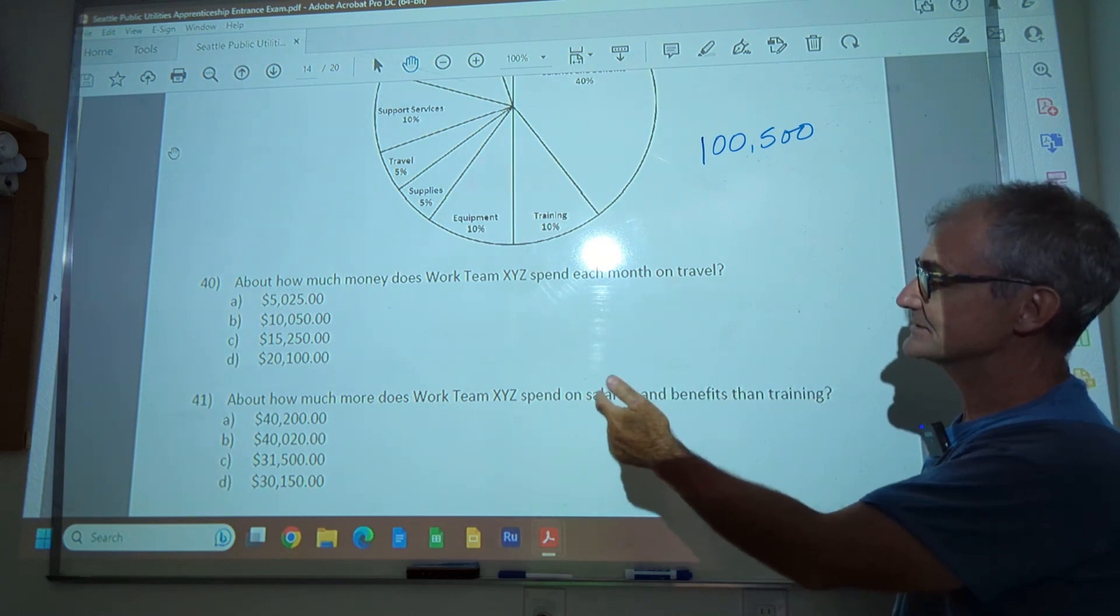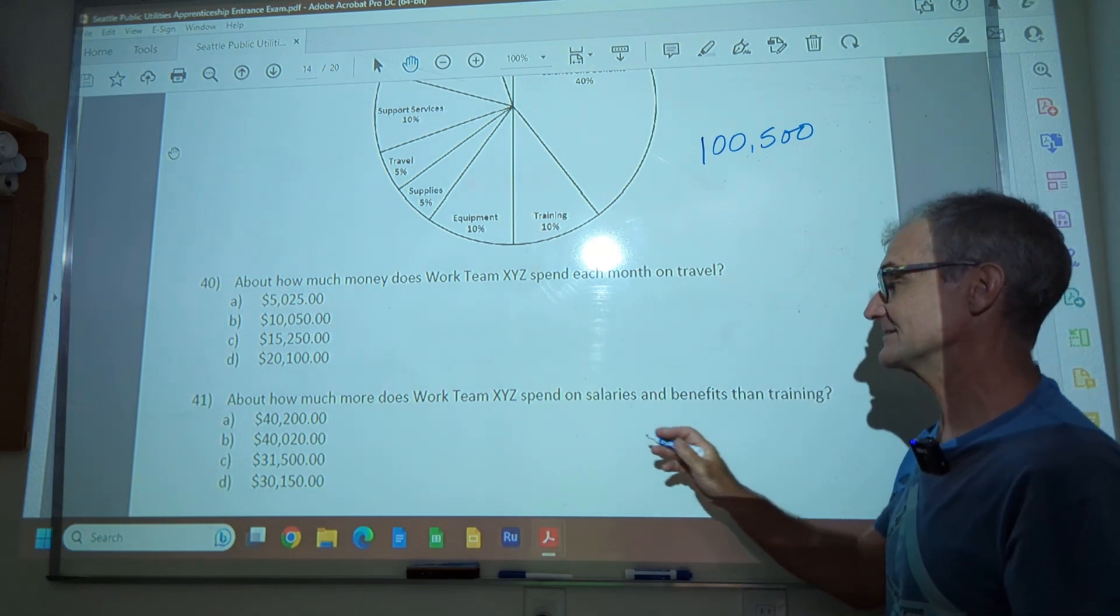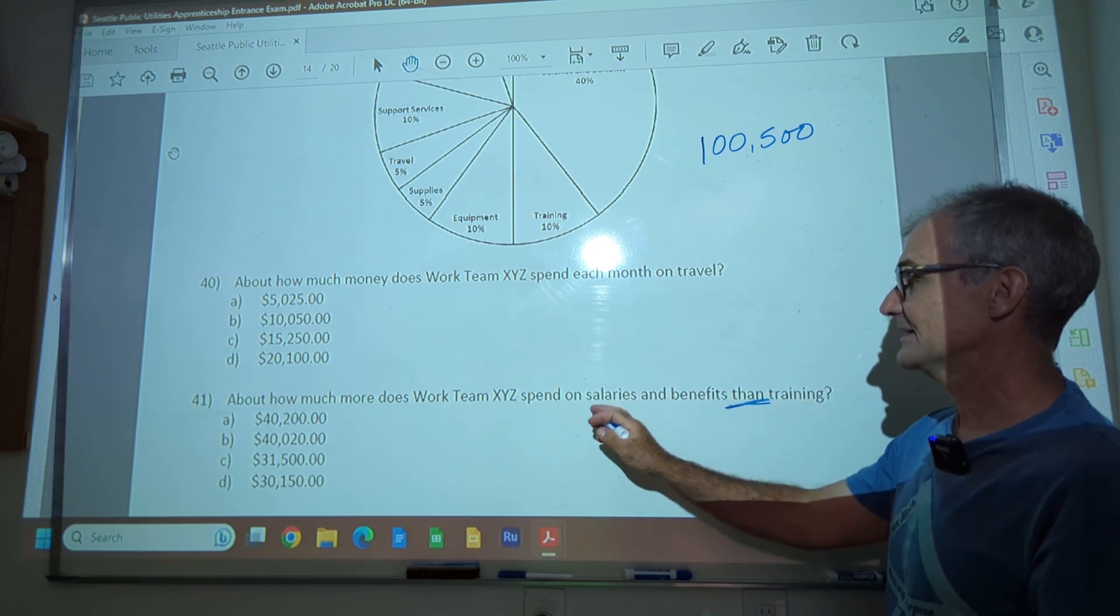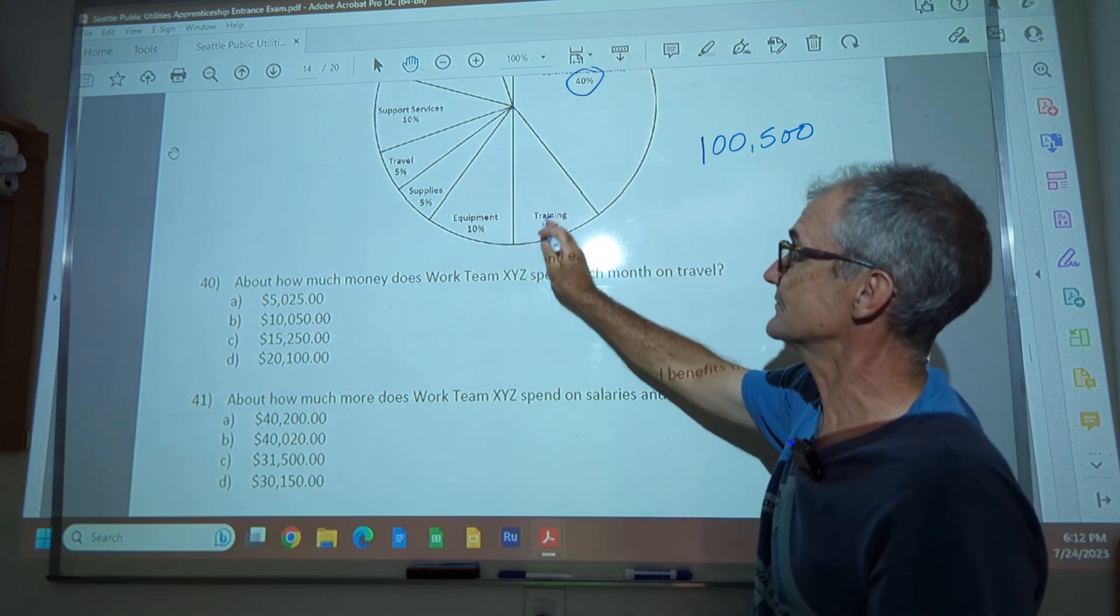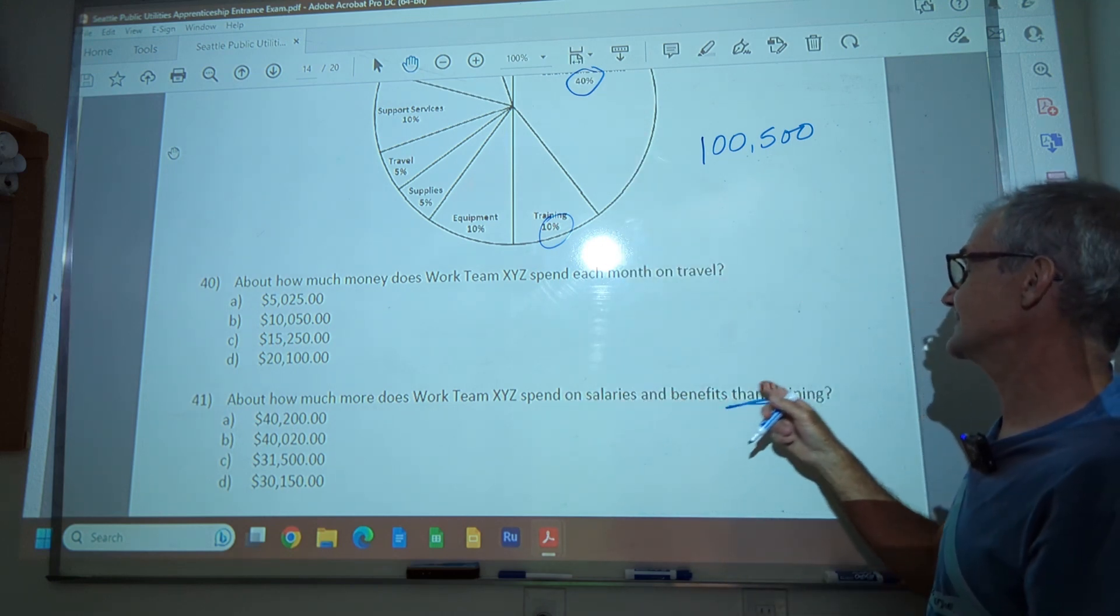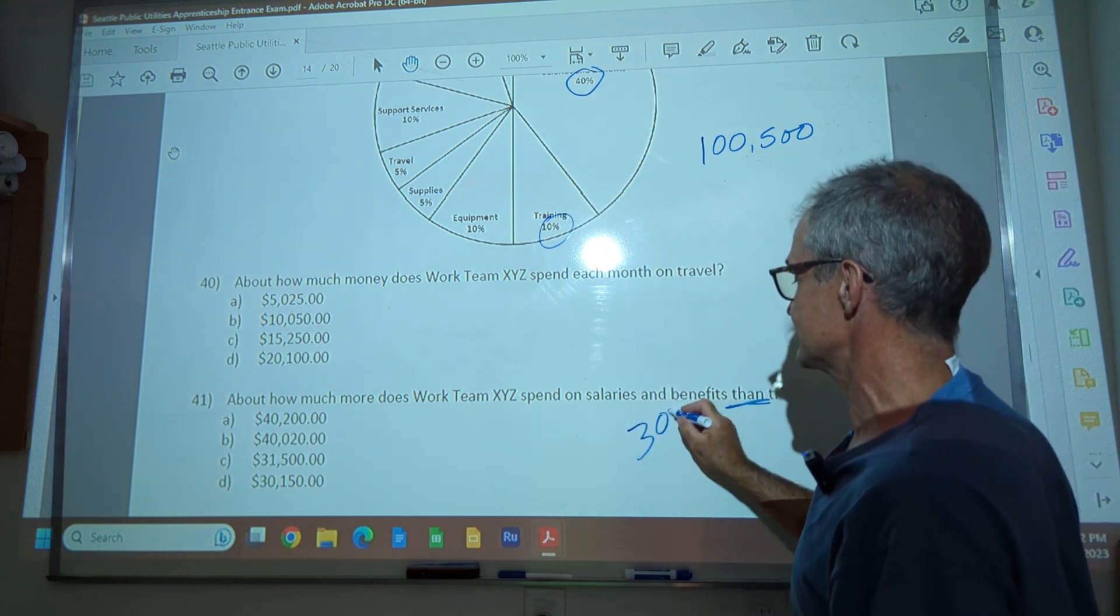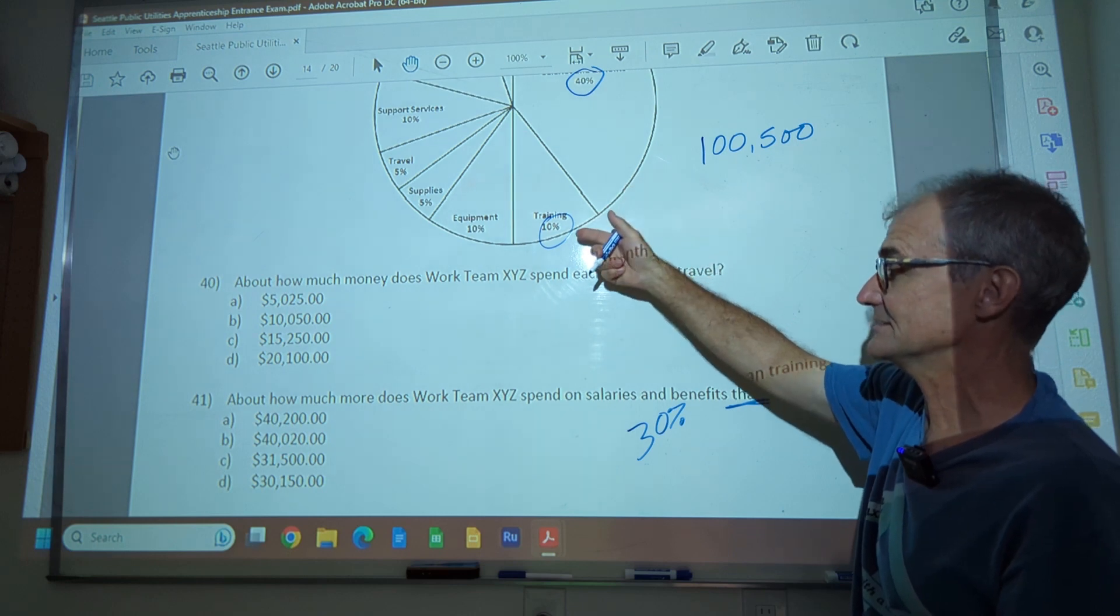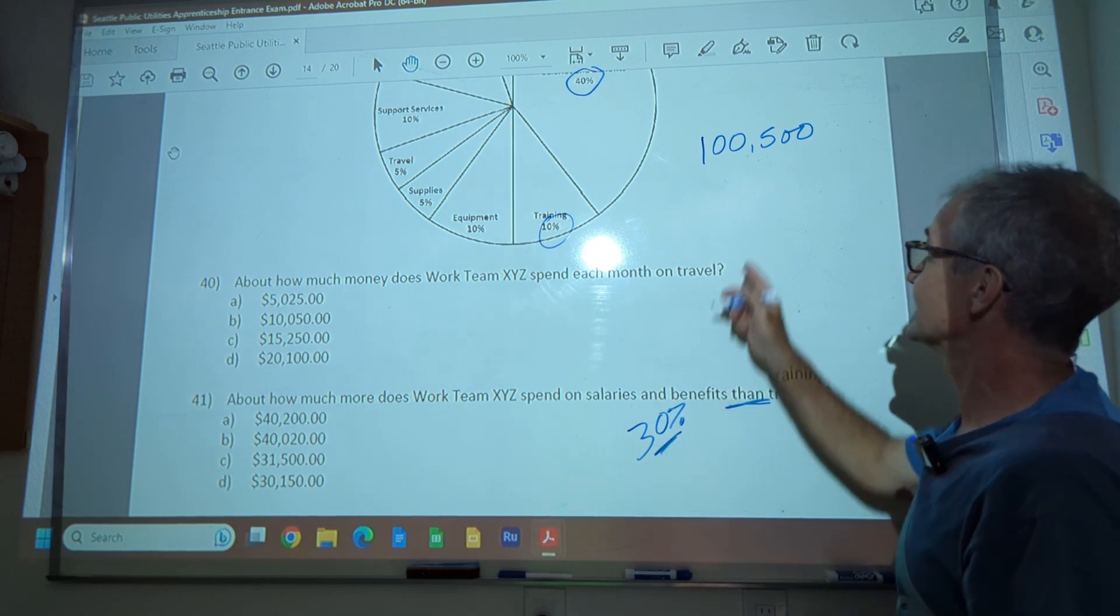How much more does the team spend on salary and benefits than training? So this is kind of tricky, actually. You got to read this pretty carefully. So what do you want? You want to know the difference between training and salary and benefits. So salary and benefits is right here at 40%. Training is 30% or 10%. Then I want to know the difference between salary and benefits and training.